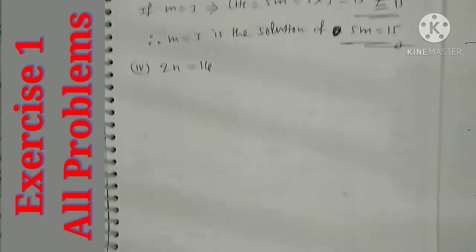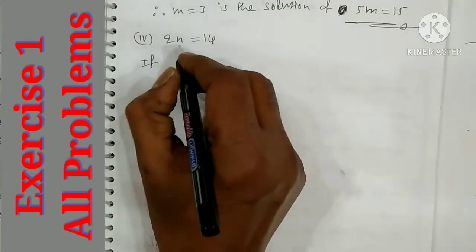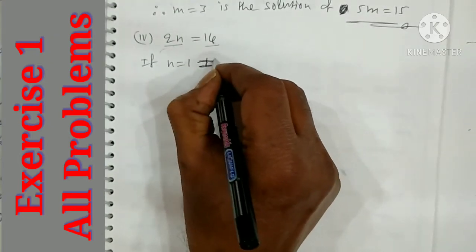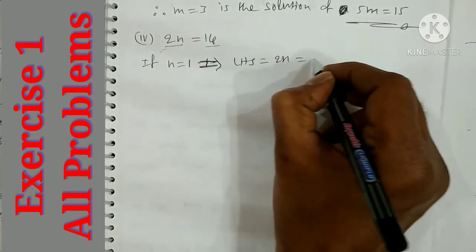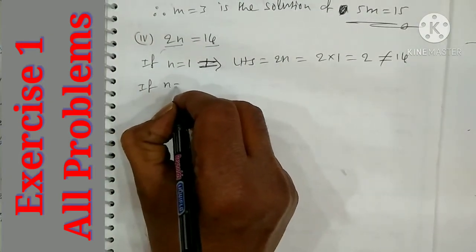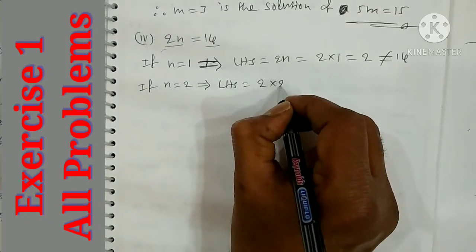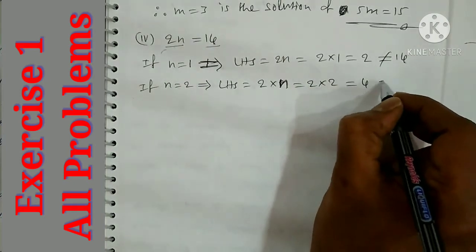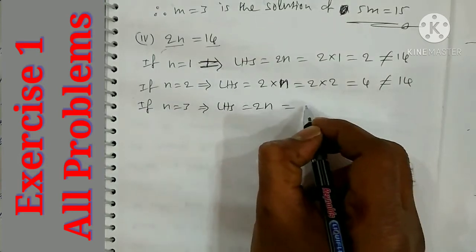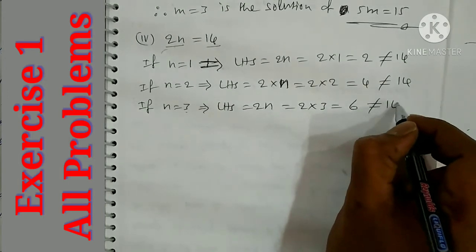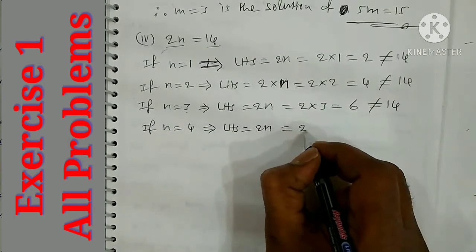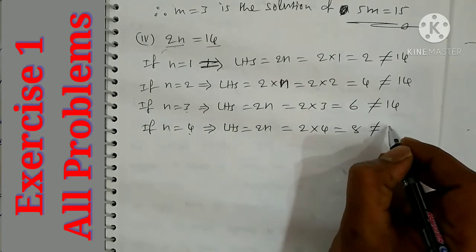Fourth one: 2n is equal to 14, same type with multiplication. LHS is 2n and RHS is 14. If n is equal to 1, then LHS is 2 into 1 equal to 2 — not equal to 14. If n is equal to 2, then 2 into 2 equal to 4 — not equal to 14. If n is equal to 3, then 2 into 3 equal to 6 — not equal to 14. If n is equal to 4, then 2 into 4 equal to 8 — not equal to 14.